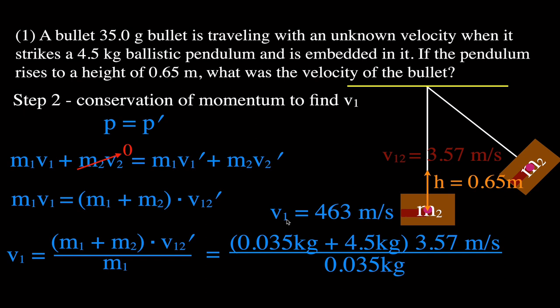That was problem number one, where we used Step 1 — conservation of energy — and Step 2 — conservation of momentum — to get the velocity of the bullet. Now we can go on and do problem number two.